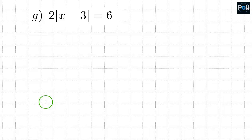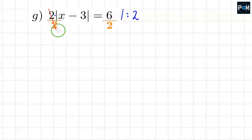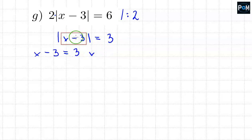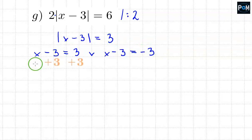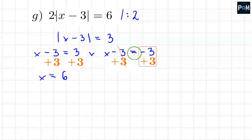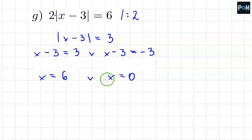Example g is similar to example f, except here we have a 2 outside the absolute value. You must first get rid of the numbers outside the absolute value, so we don't want this 2 here. Since it is multiplication, we divide everything by 2. The number 2 disappears, leaving only the absolute value of x minus 3. On the other side, we divide 6 by 2, resulting in 3. Again we have two cases: x minus 3 equals 3, or x minus 3 equals negative 3. Adding 3 to both sides of the first gives x equals 6. Adding 3 to both sides of the second gives x equals 0. So the solutions are x equals 6, or x equals 0.